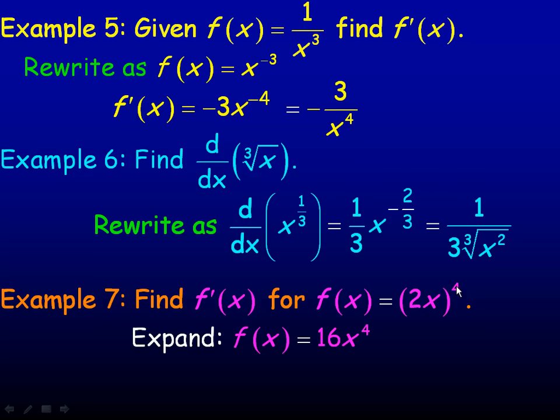So you evaluate 2⁴, which is 16, and x⁴, which is x⁴. So we expand it out, and then differentiate. So we're just using the power rule. The 4 comes down in front, multiplies by the 16 to give you 64, and then decrease the exponent by 1 to 3. So the derivative is 64x³.